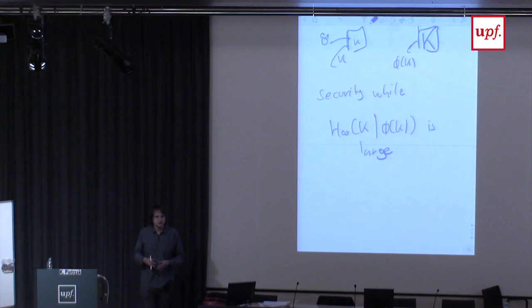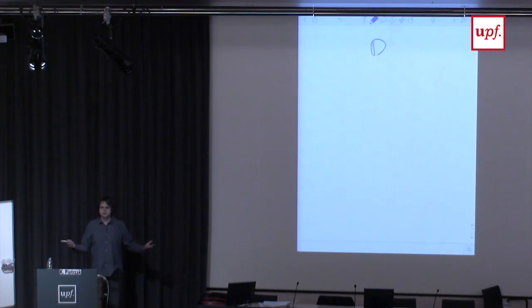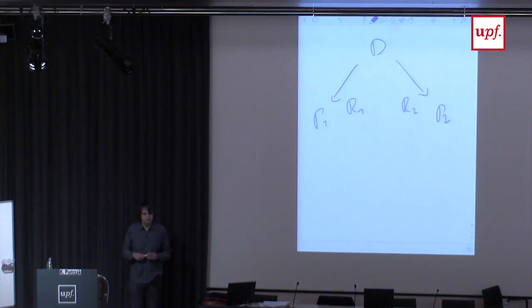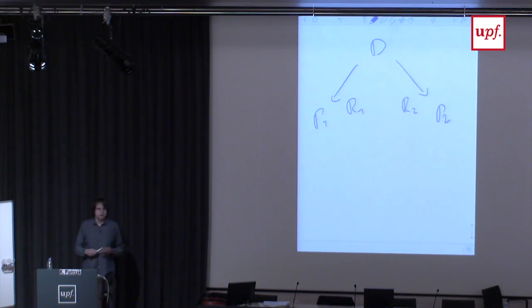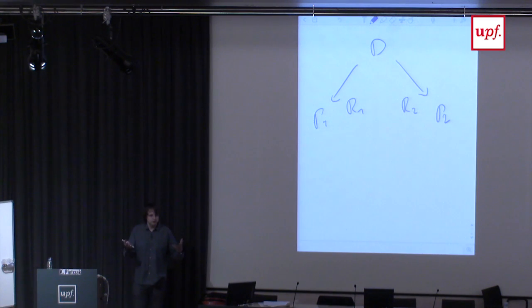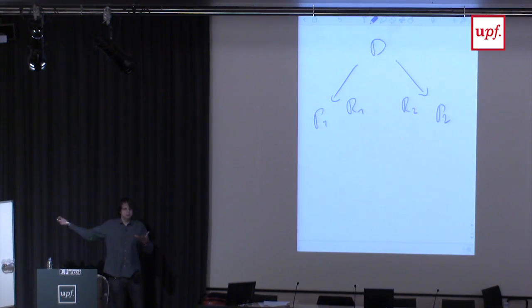How can we use this intrusion-resilient paradigm for secret sharing? Here's a very simple idea: again we have a dealer, and instead of having short secrets R1 and R2, let's pick gigantic secrets — think of R1 and R2 as 100-gigabyte uniformly random strings. What would be the shared secret? There is something called a two-source extractor.